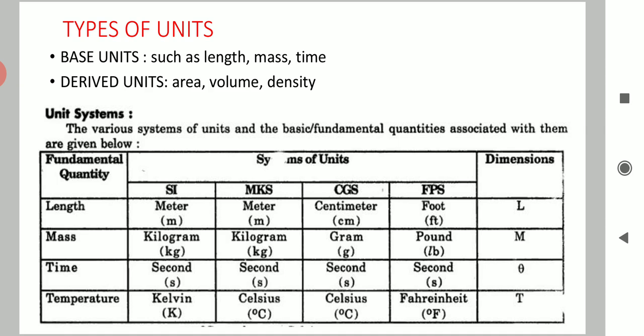For example, if we multiply length with length it will become area, and if we multiply length with height then it will become volume. So the unit of area will be meter square and unit of volume will be meter cube. Similarly, if we talk about density, the unit of density is also derived from mass and volume, because the unit of density is kilogram per meter cube.